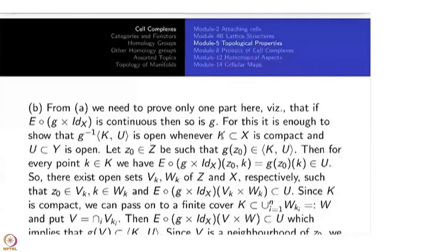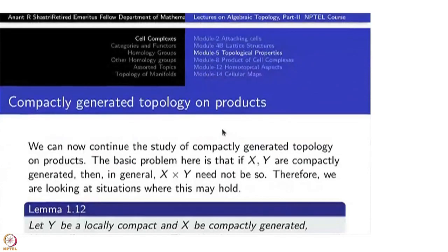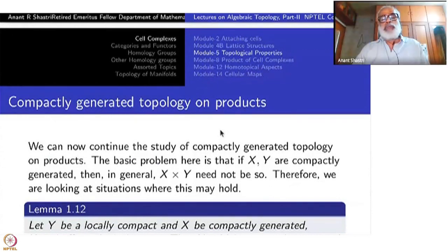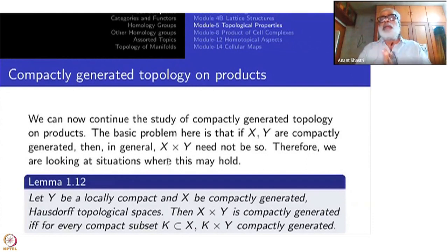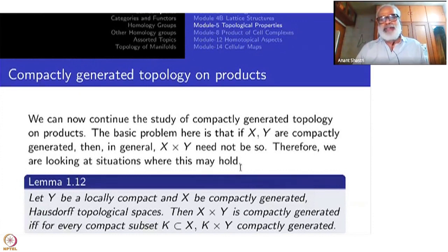Now we come to the study of compactly generated topology. The basic problem here is that if X and Y are compactly generated, in general the product topology need not be compactly generated. Therefore we are looking at situations — extra conditions on X and Y — under which this may be true. However, there are no if-and-only-if conditions in full generality, so we will study whatever is best known about various conditions.